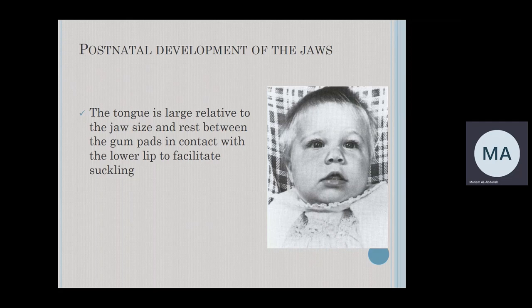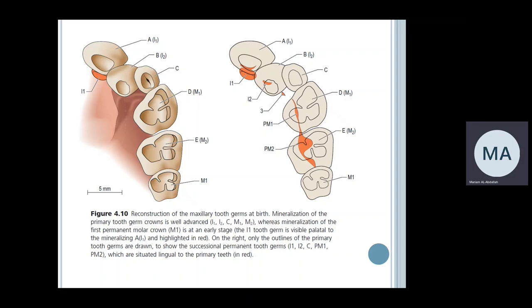The gum pads anteriorly do not meet — we have anterior open bite — and this is important for the tongue to come forward to meet the lower lip to facilitate suckling and feeding for the baby. At birth, the gray colored teeth represent those that are calcified: the primary teeth A, B, C, D, and E. Also at birth, the first permanent molar should start calcification. The red areas represent the developing follicles of the future permanent teeth — central, lateral, canine, first premolar, second premolar — which are not yet calcified.